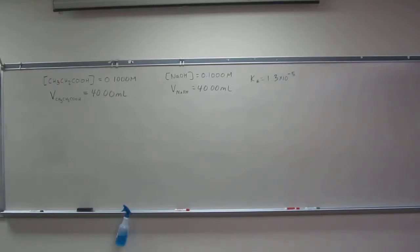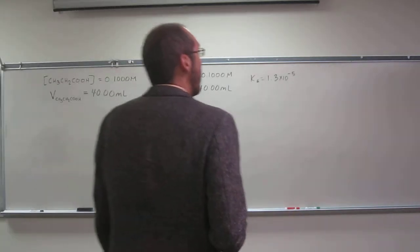Okay, so let's do the third part of this, finding the pH during a weak acid strong base titration. Now we're going to calculate the pH of the solution following addition of 40.00 mL of NaOH.